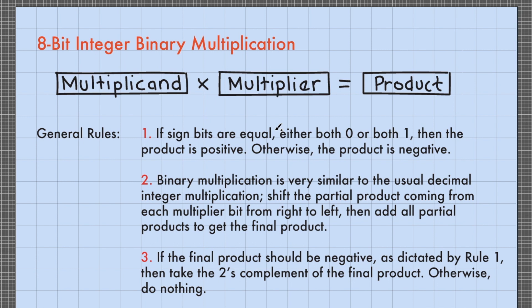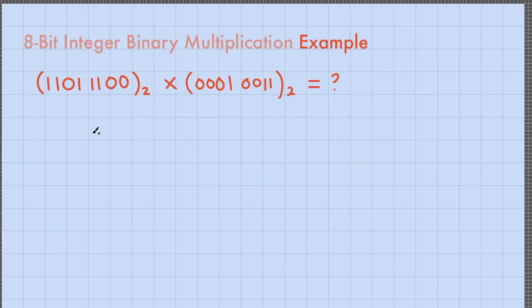We also have a fourth rule: the number of decimal places of the final product must equal the sum of decimal places from the multiplicand and the multiplier. You may explore this rule on your own. Application of these rules becomes more familiar if we use them on an actual example.